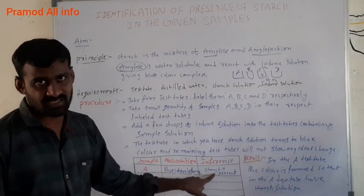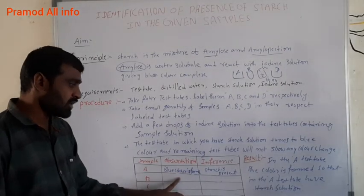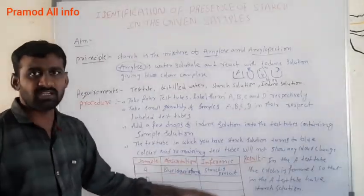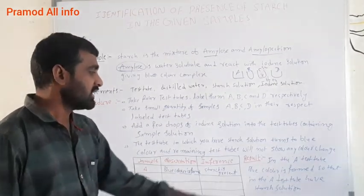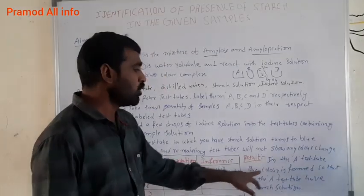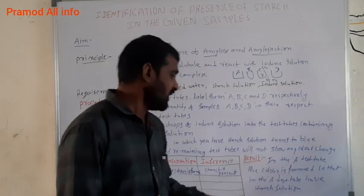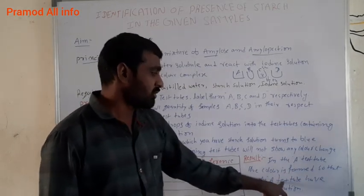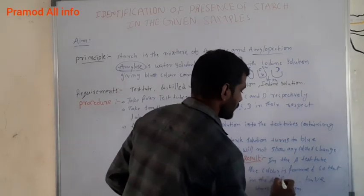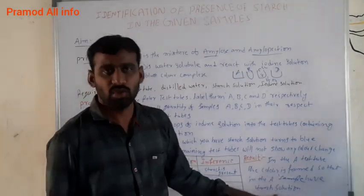Starch is present — inference: starch is present. Blue color is not formed — inference: starch is absent. For example, the C test tube shows blue color formed, so C sample has the starch solution.